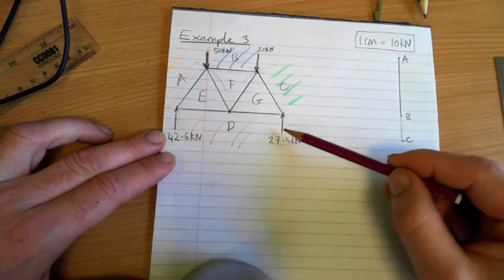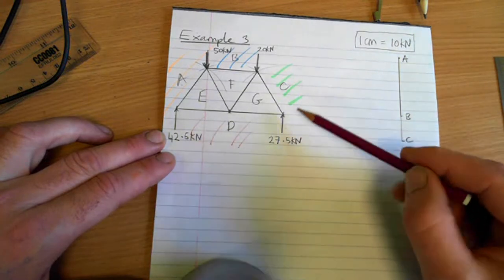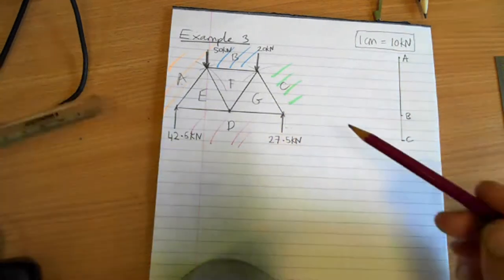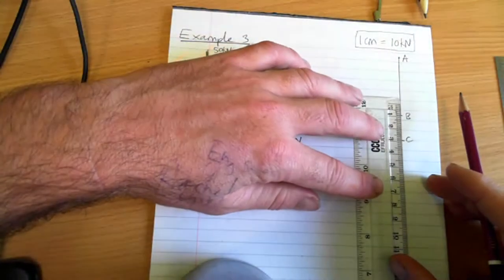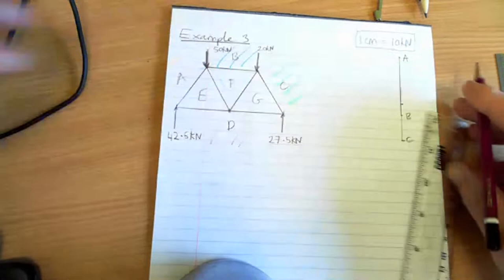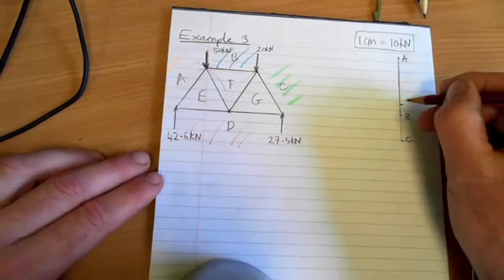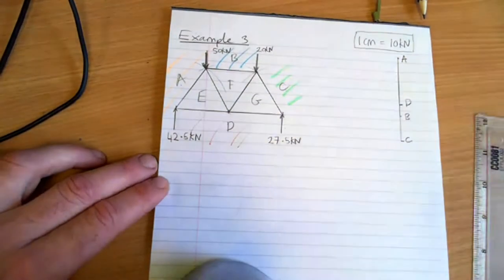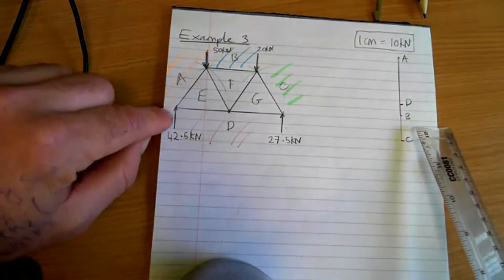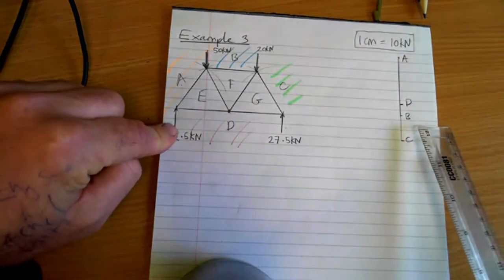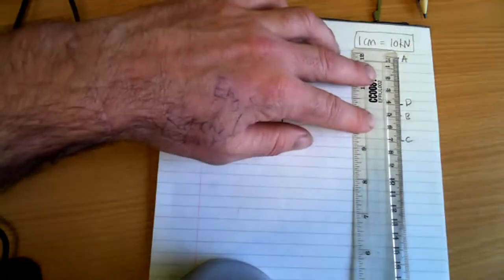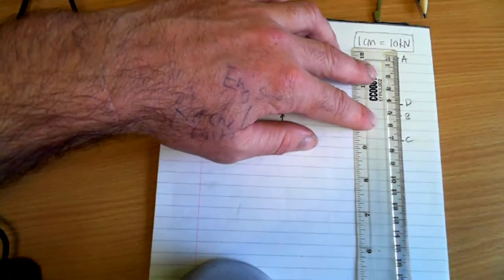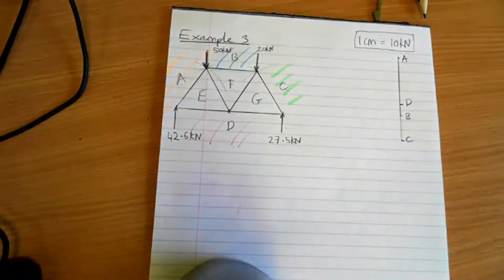So these reactions at the base here are in opposite directions. So this arrow here is called CD. So CD will be 2.75 centimeters the other way. Do this as best I can. So this point now is point D. We can now check that this reaction here, AD, should be 4.25 centimeters. Which isn't quite, is it? But I'm going to continue anyway.